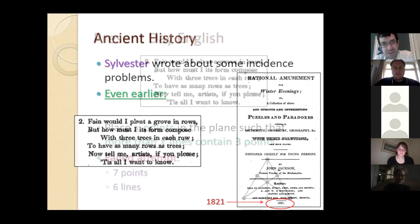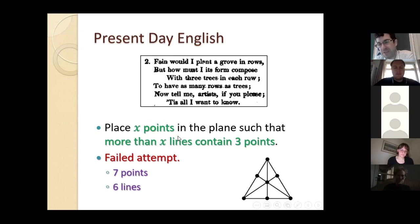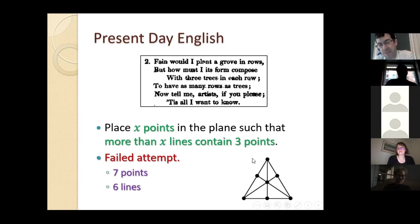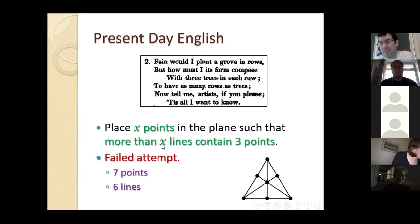The riddle in old verse reads: 'Fain would I plant a grove in rows but how must I its form compose, with three trees in each row, to have as many rows as trees.' In present-day English: place x points in the plane such that more than x lines each contain three points. Here's a failed attempt with seven points — we only get six such lines, but we need at least eight. I'll tell you the answer at the end.